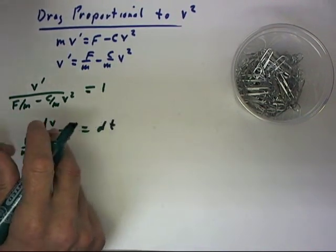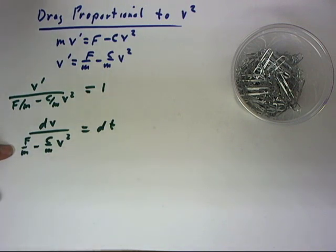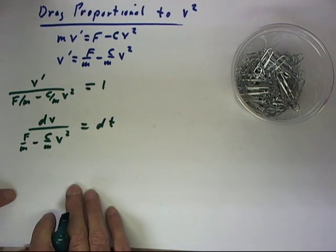This side is clearly easy to integrate. This side, well, we simply have a polynomial in the denominator. If we can factor this, we can use partial fractions. Now, before we attempt to factor this,